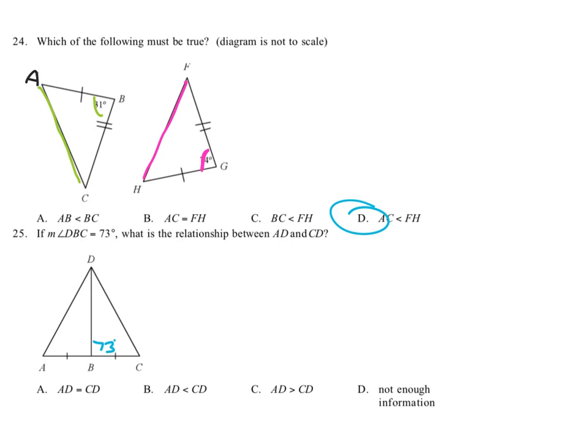that this angle is 73 degrees, and so because those two form a linear pair, we know that ABD has to be 107 degrees so they add up to 180. And then we're dealing with the same thing. We have